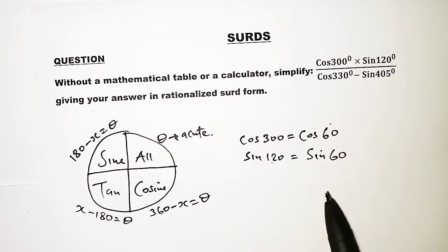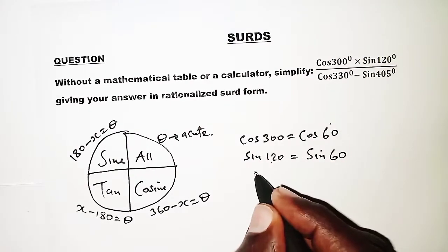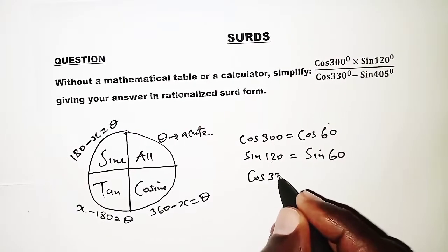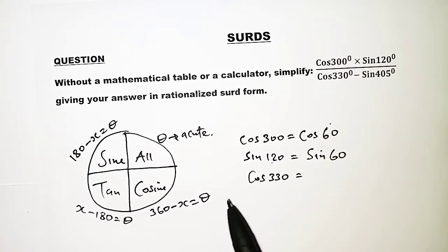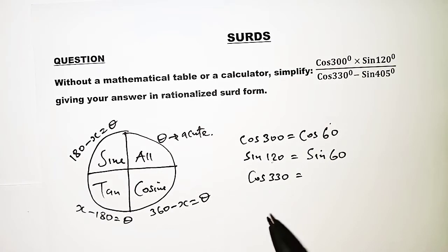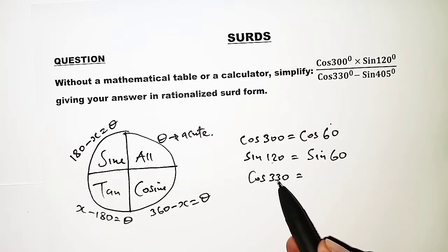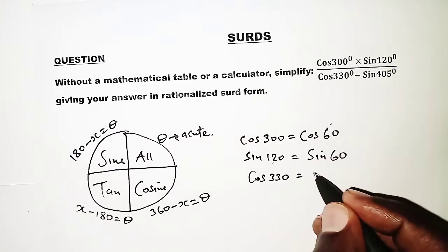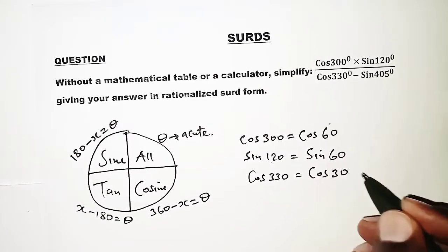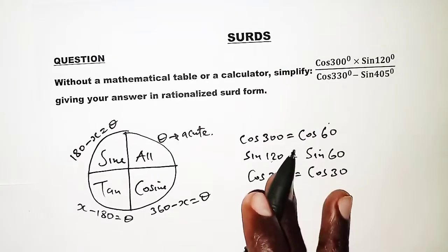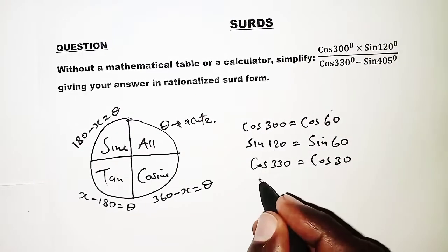We also have cosine of 330. Again, 330 is in the fourth quadrant where cosine is positive, so we use 360 minus 330, which gives us cosine of 30.